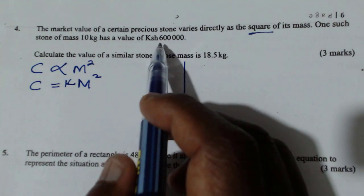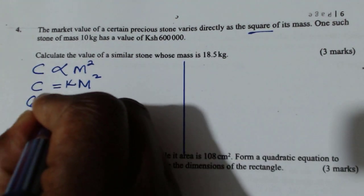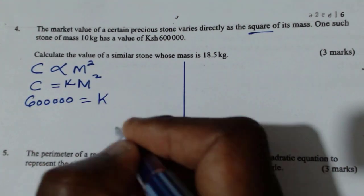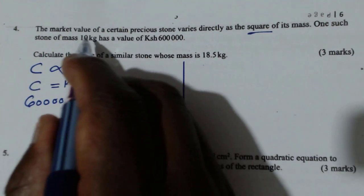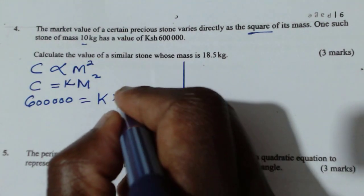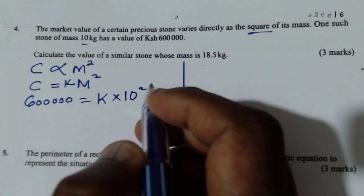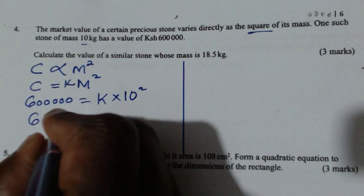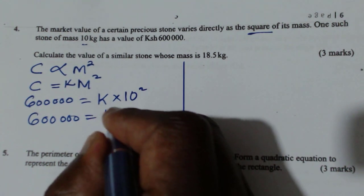So when the cost is 600,000, so when C is 600,000, we have the constant, which is K, multiplied by the mass at that time is 10 kg. And because it is mass squared, we have to multiply that by itself, 10 squared. So you have 600,000 equals 100k.